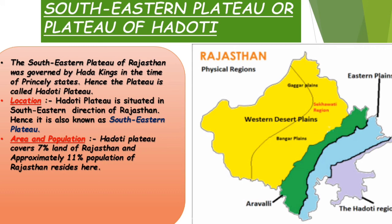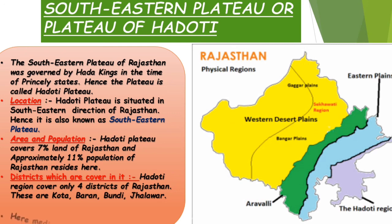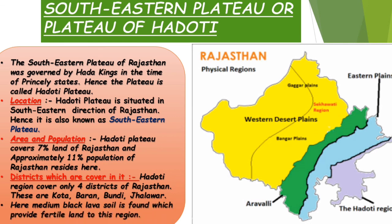Regarding area and population: the Hadoti Plateau covers 7% of Rajasthan's land and approximately 11% of Rajasthan's population resides here. The Hadoti region mainly has four districts: Kota, Bundi, Jhalawar, and Baran. The Hadoti region is also known as the Lava region because medium black lava soil is found here, which provides fertile land. Black lava soil is best suited for cotton cultivation.